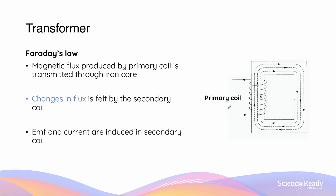The magnetic flux produced by the current flowing through the primary coil is transmitted through the iron core to the secondary coil. Since the current in the primary coil is alternating, or AC, the changes in flux are felt by the secondary coil, and by Faraday's law, an EMF and current are therefore induced in the secondary coil.